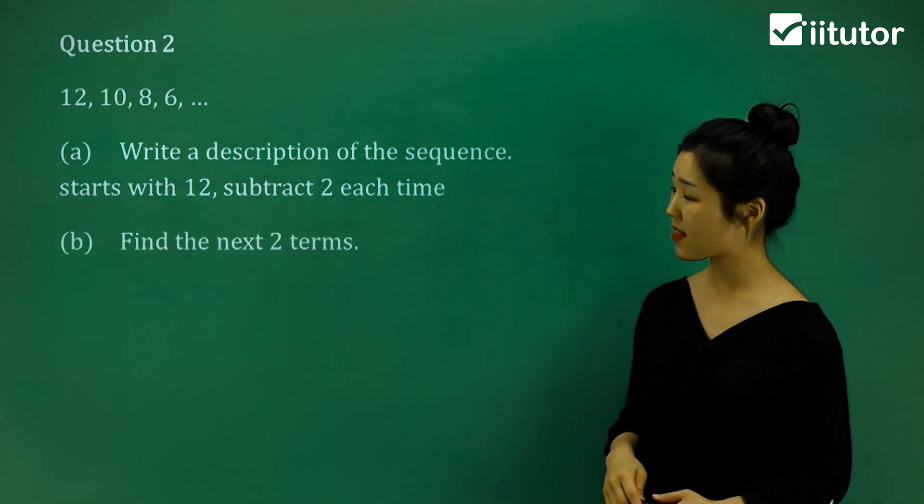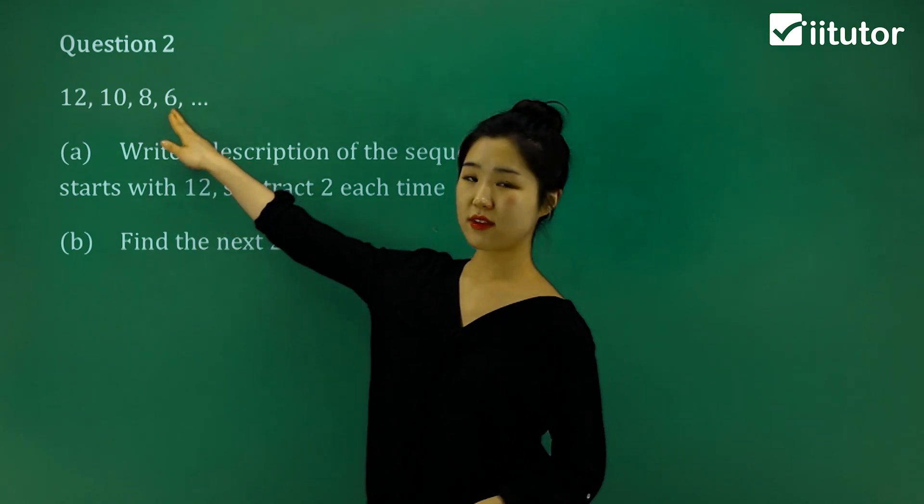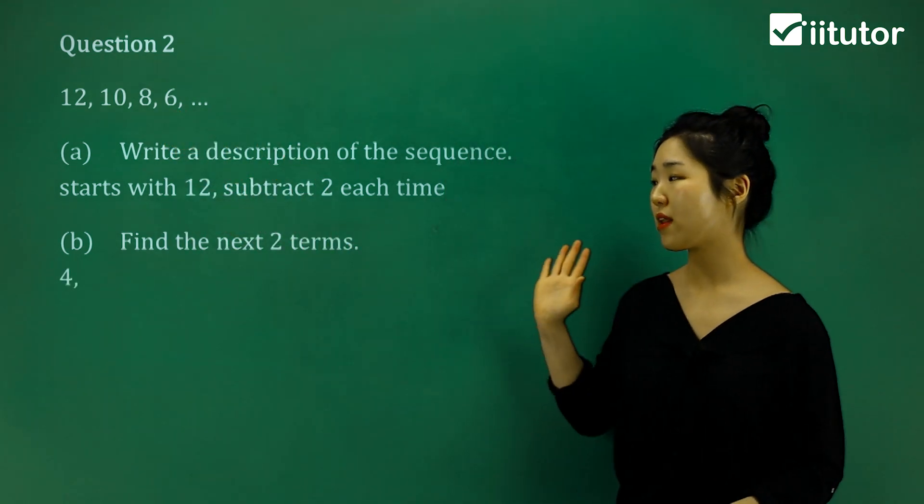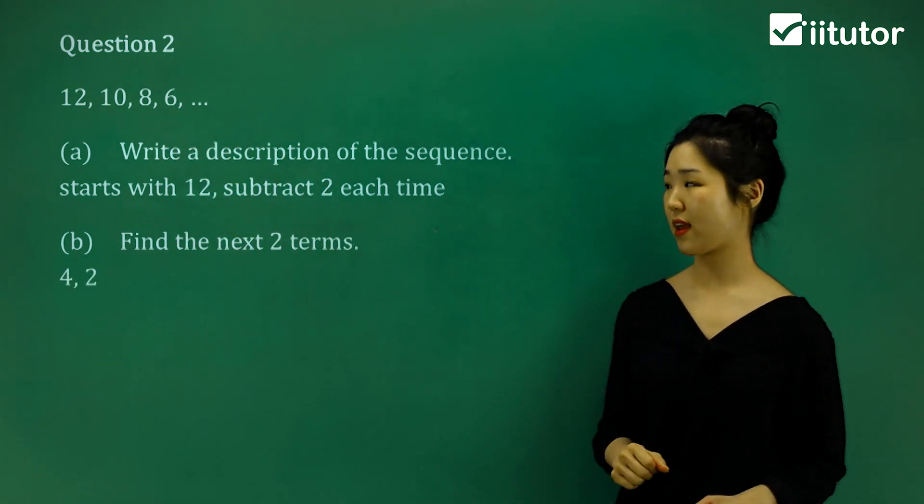So when it says find the next two terms, we're going to subtract 2. So 6 minus 2 is 4. 4 minus 2 is 2. That will be the next two terms.